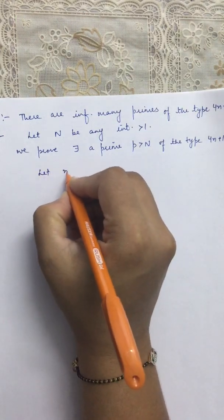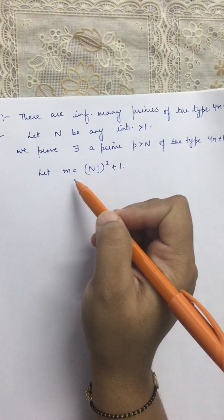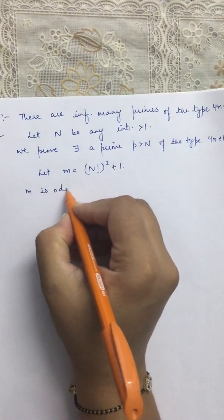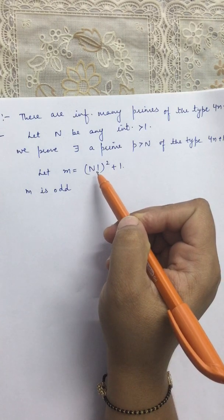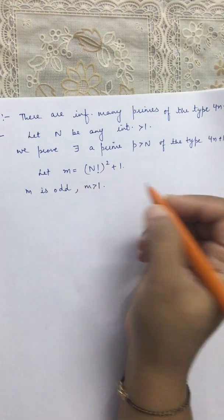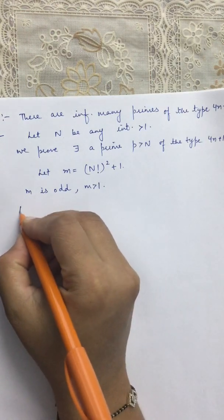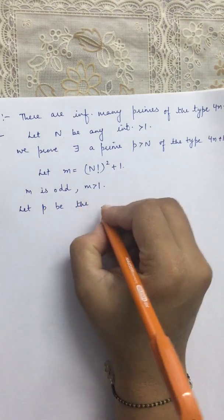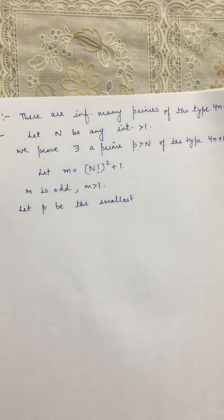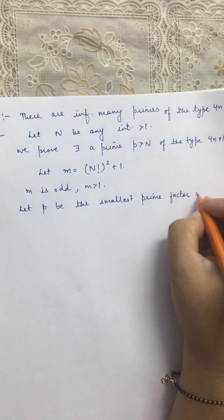Let n be any integer greater than 1. Now let m = (n!)² + 1. Then m is odd because n! is even (it contains 2 as a factor), so (n!)² is even and m = even + 1 is odd. Also m > 1. Now let p be the smallest prime factor of m. This p is our required prime, since we want to prove there exists a prime p greater than n of the type 4k+1.